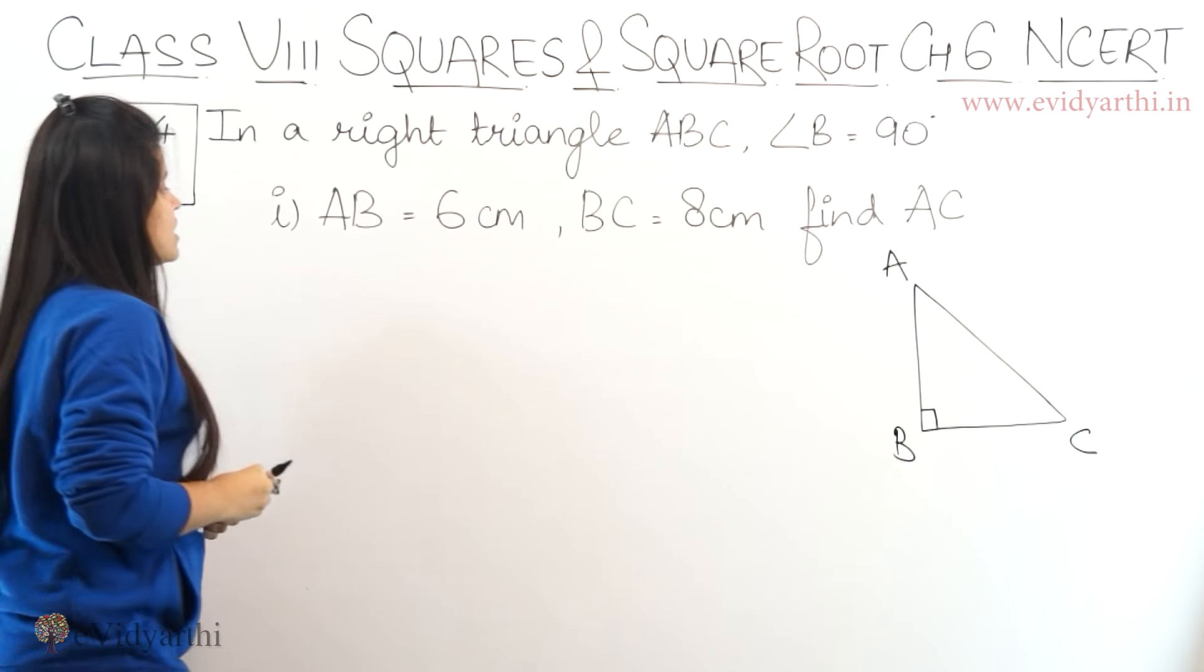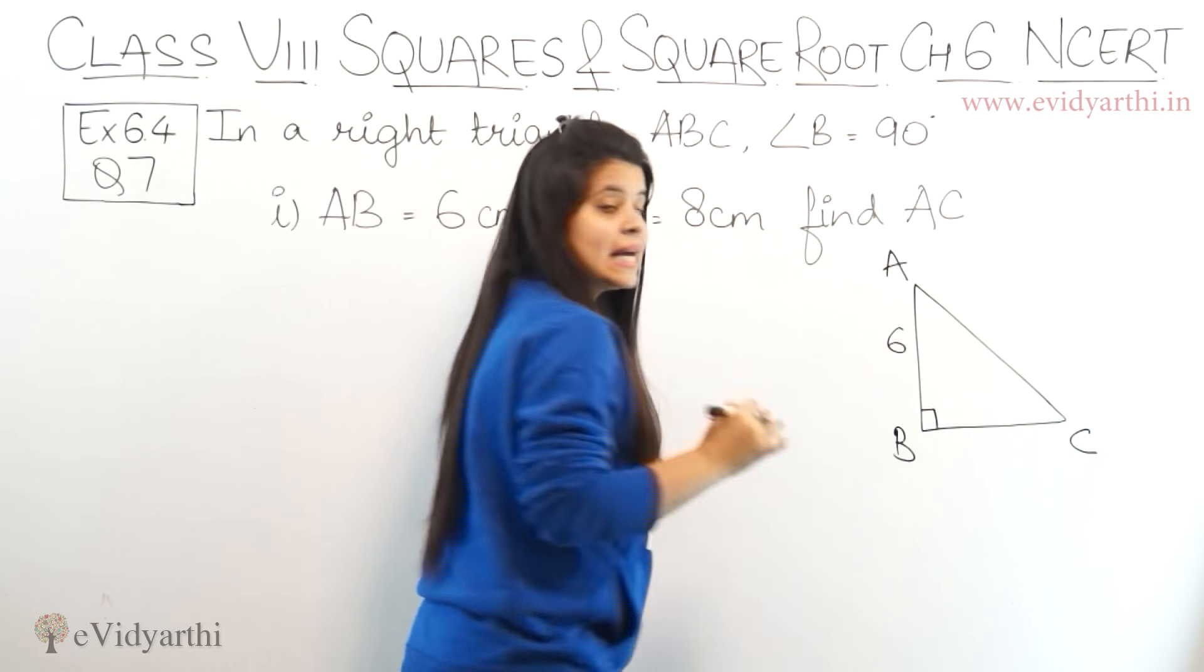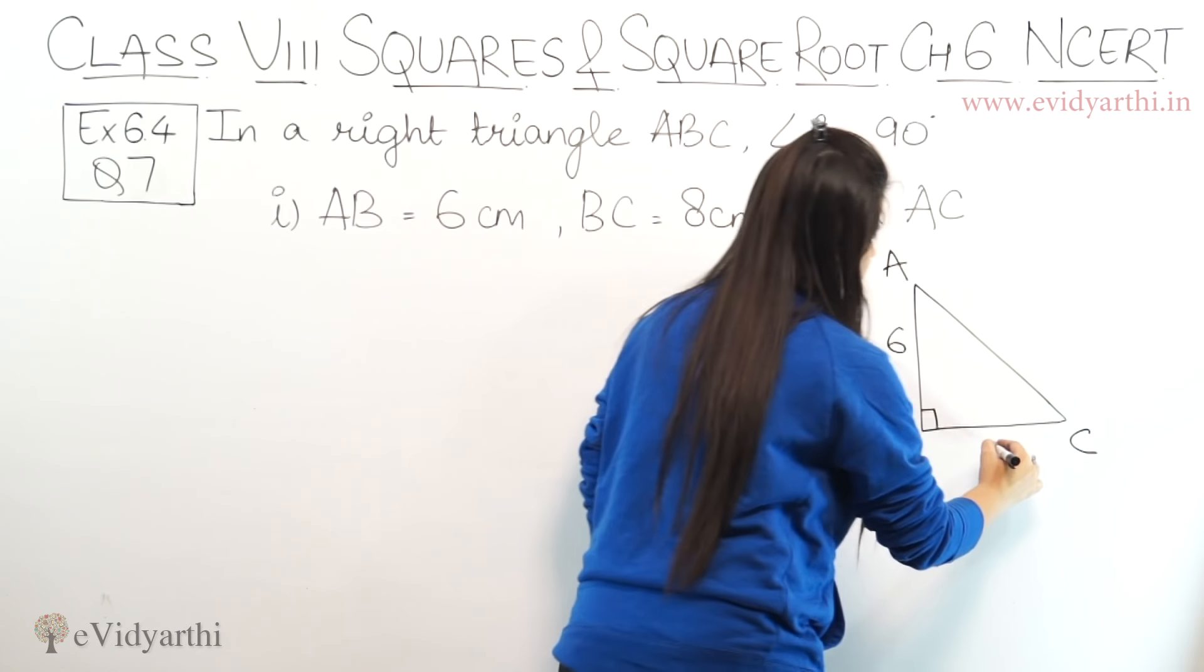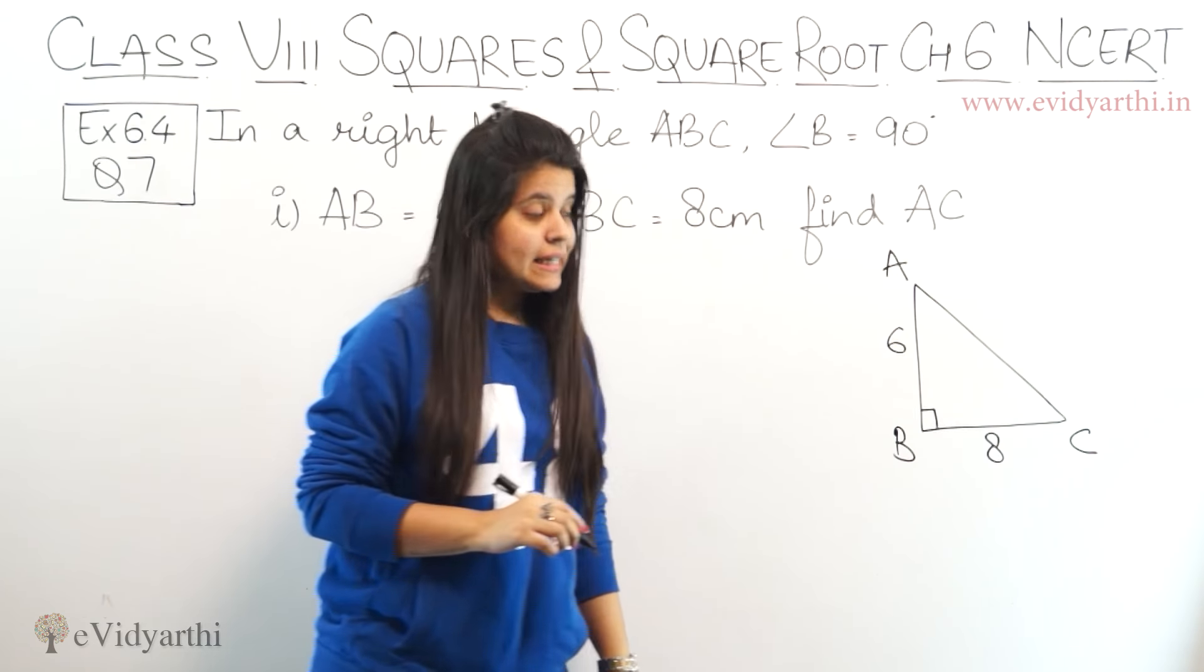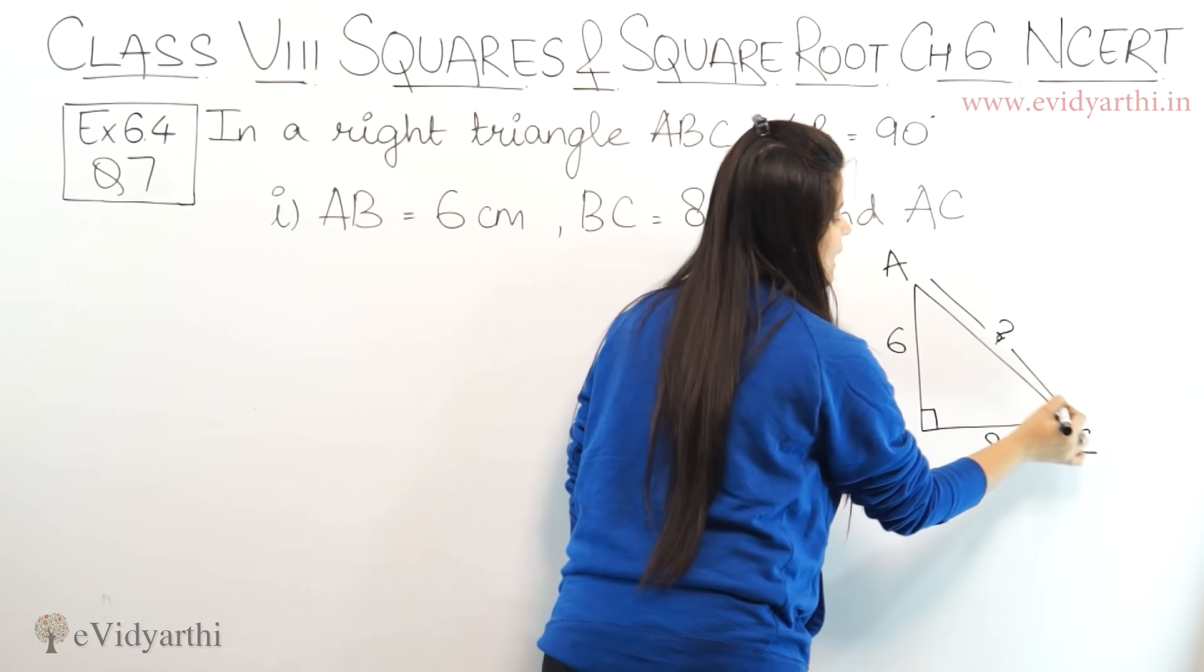The first part says AB equals to 6cm, BC equals to 8cm, and find AC. AC we have to find.